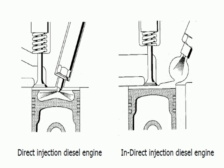In diesel engines, only air is sent into the combustion chamber during induction. This air is compressed during the compression stroke, and towards the end of the compression stroke, fuel is injected by the fuel injection system into the cylinder, just before the desired start of combustion.